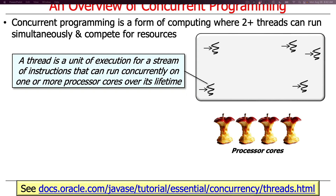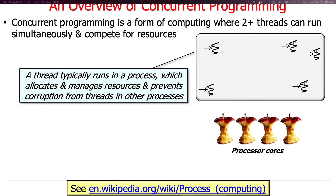These are the processor cores shown visually — represented here as little Apple cores. A thread typically runs in the context of a process, certainly in Java. Some older real-time embedded operating systems didn't have the concept of a process, but pretty much everybody has it now. In the diagram, the process is the grayish rounded rectangle, and the threads are the little squiggly marks within it.